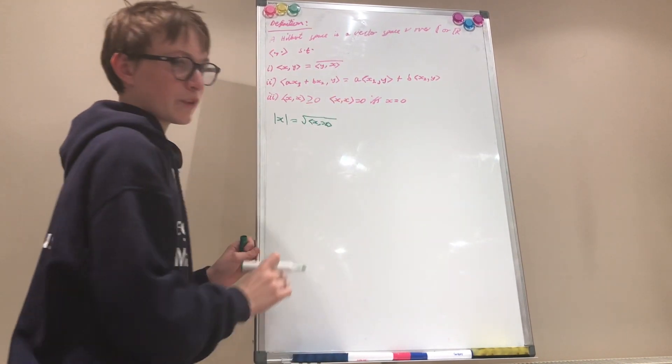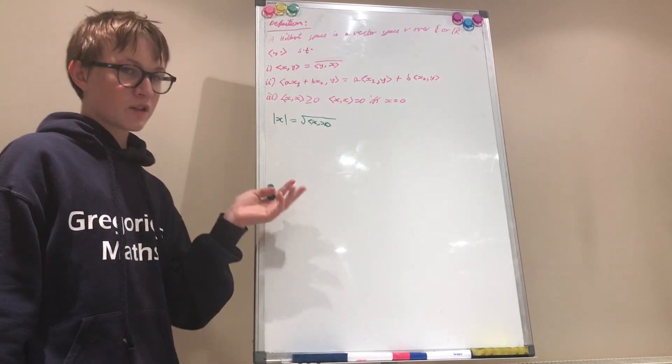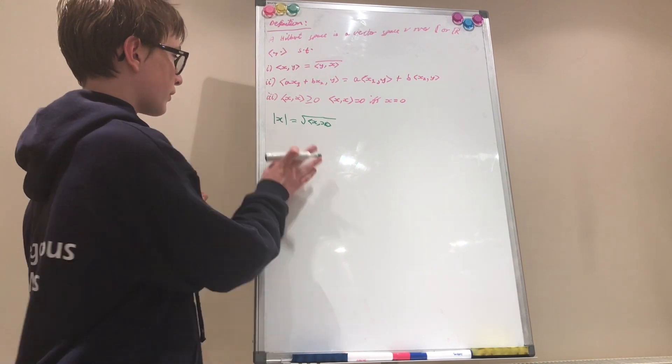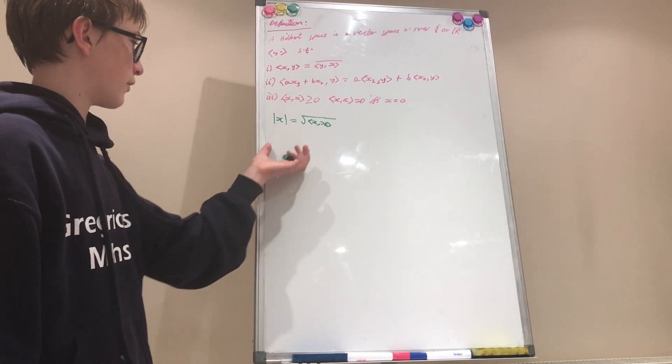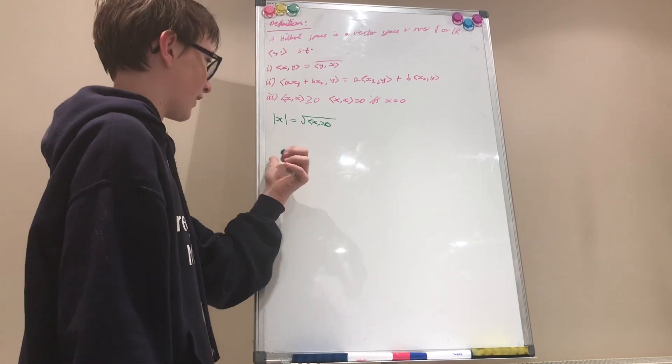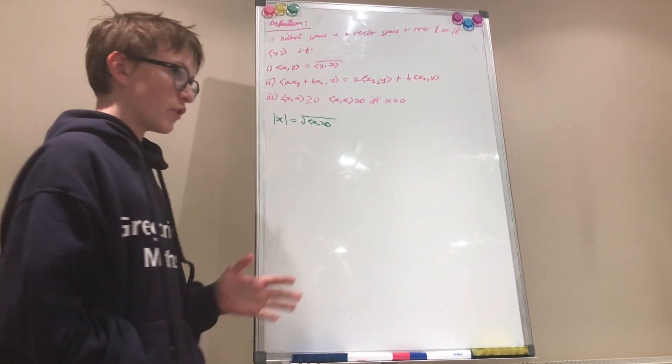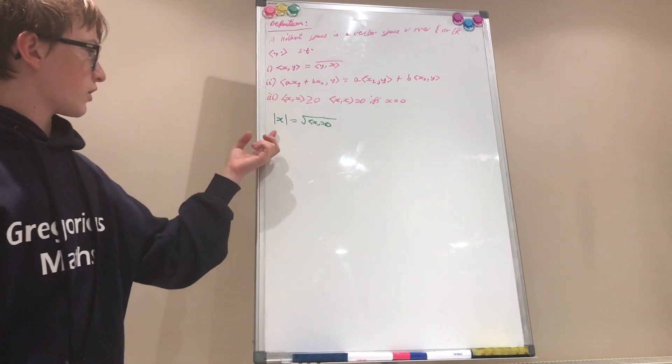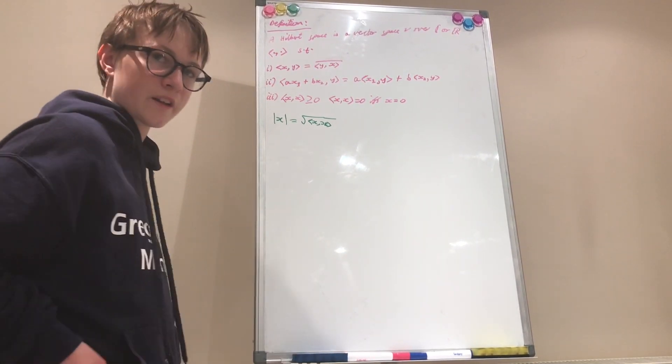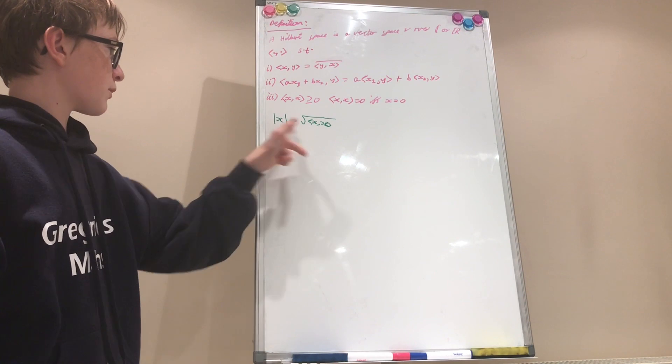So if we take a look at our Euclidean space R3, well the norm of x is just going to be the absolute value or the magnitude of some vector x, because we know that the square root of x squared is the absolute value of x, which is the magnitude of x. So the norm of x is just the magnitude of x in R3, but in general this is how it's defined.